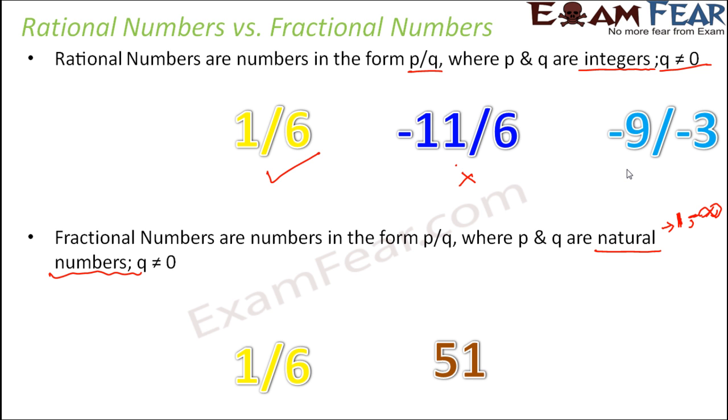When you look at examples of fractional numbers, it could be one by six, fifty-one, ten by twenty-four. These are all fractional numbers. We can say that all fractional numbers are rational numbers because for rational numbers, p and q need to be integers, and for fractional numbers, p and q need to be natural numbers.